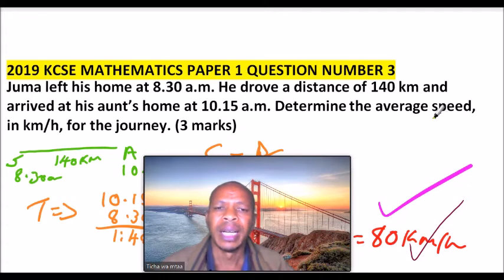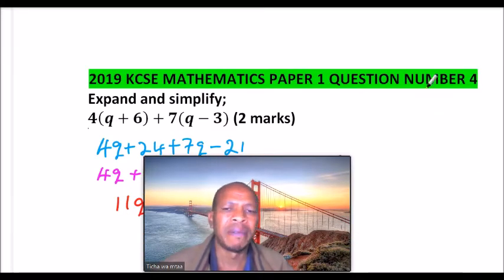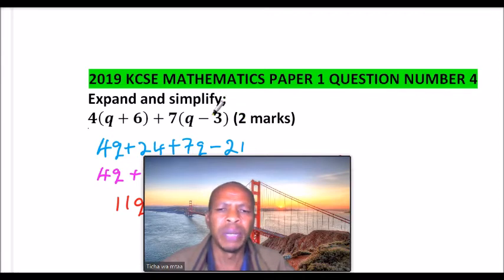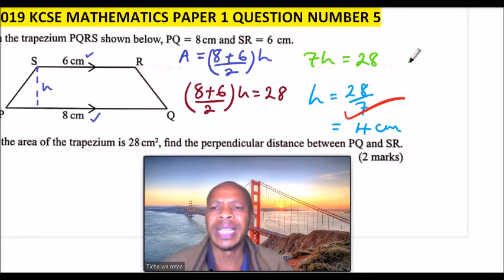The next question is number four: expand and simplify 4(q + 6) + 7(q - 3). You also learned how to do this in algebra in form two. Remember, question one tests the work you did in form one and form two, so you should be able to get good marks in this section or paper.